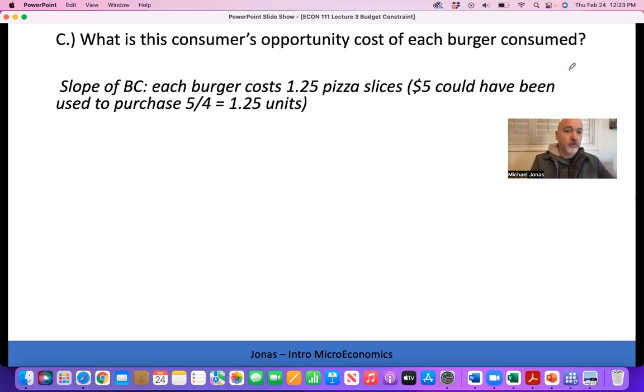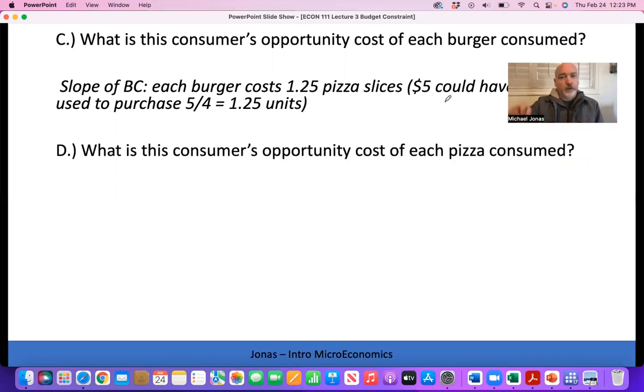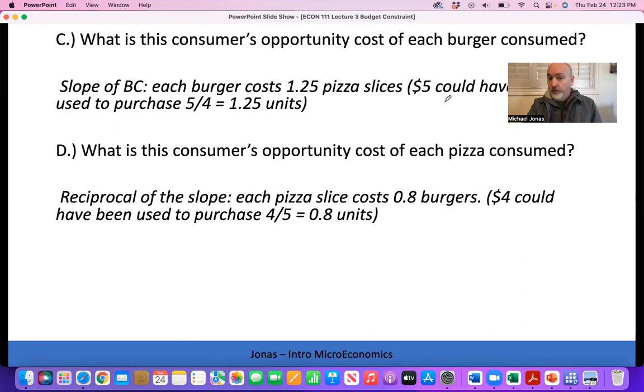If we consume one more burger we're spending $5. We could have used that $5 to buy pizza, which only cost $4 per unit, so we could have bought 1.25 units. The opportunity cost of pizza is just the reciprocal - we flip that around. So it's 1 over the slope, in this case 4 over 5.